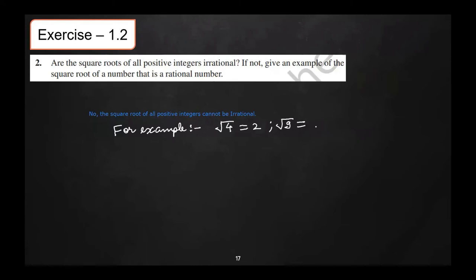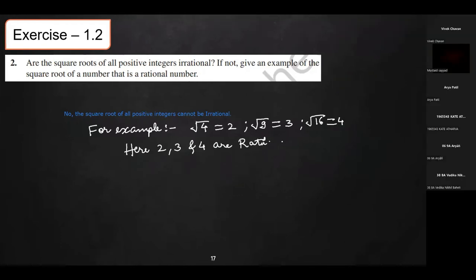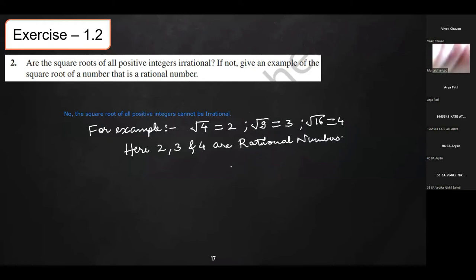√9 = 3, and 3 is also a rational number. √16 = 4, and 4 is also a rational number. Here 2, 3, and 4 are rational numbers. So if we take the square root of positive integers, we won't always get an irrational number.